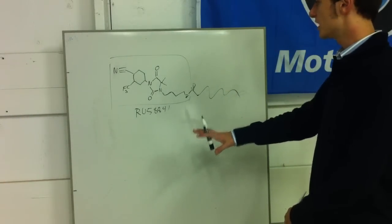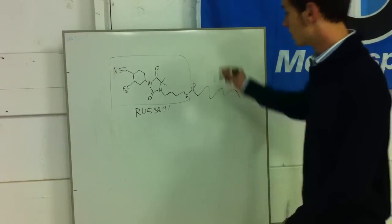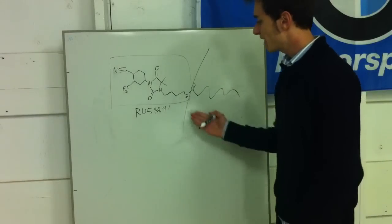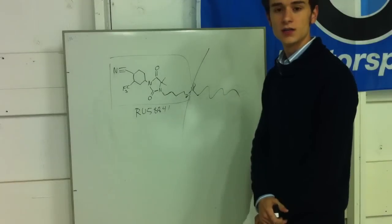It will be metabolized back into the potent antiandrogen known as RU58841.